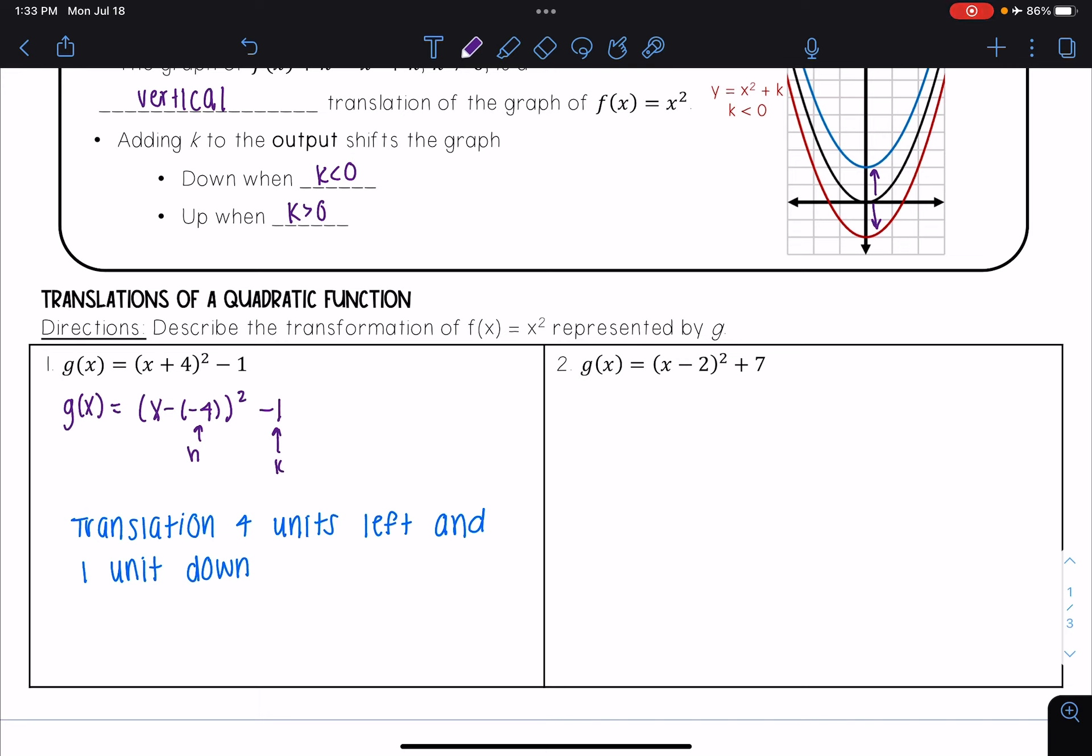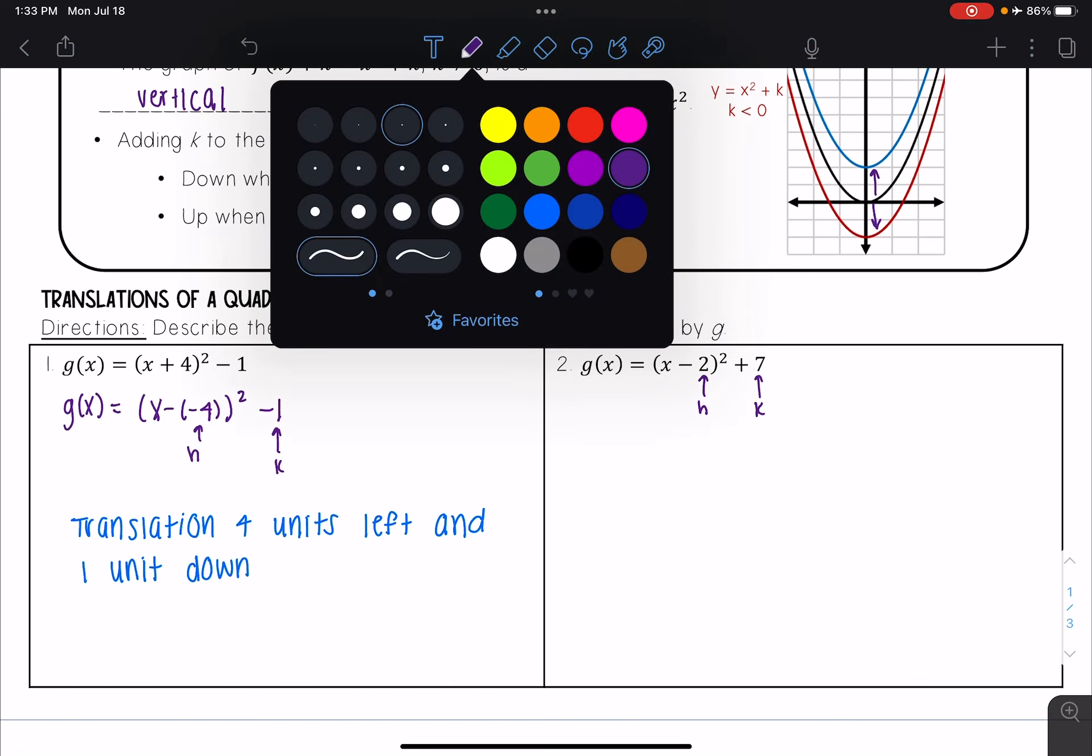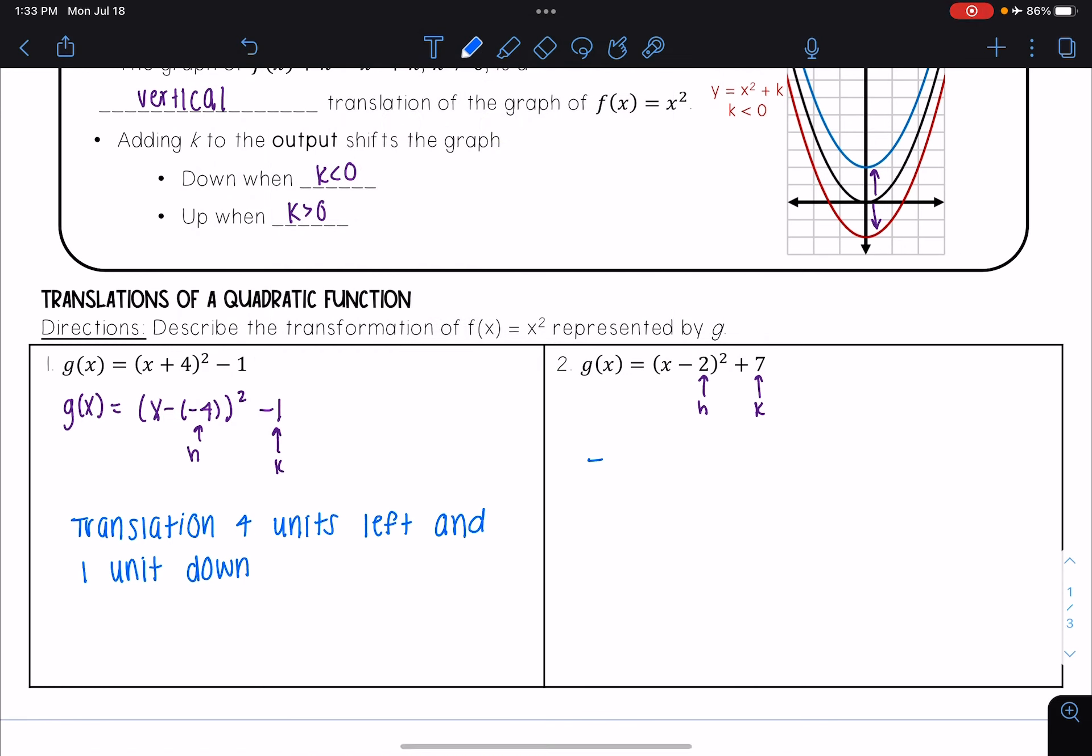I see that k is 7, so both of these are positive. That means this is going to be a translation 2 units right. Since I have x - 2, that's going to the right. And since 7 is positive, this will be going up 7 units.